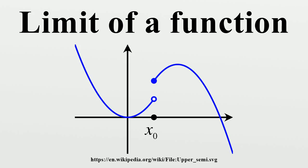Alternatively, X may approach P from above or below, in which case the limits may be written as right-hand or left-hand limits respectively. If these limits exist at P and are equal there, then this can be referred to as the limit of F at P. If the one-sided limits exist at P but are unequal, there is no limit at P. If either one-sided limit does not exist at P, the limit at P does not exist.